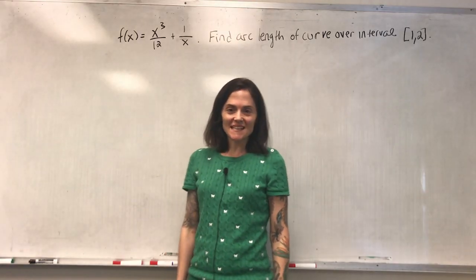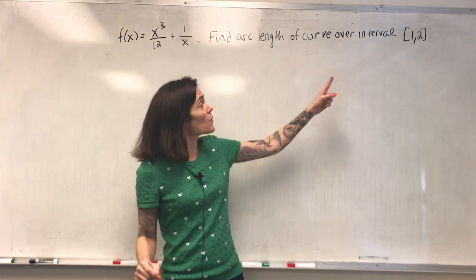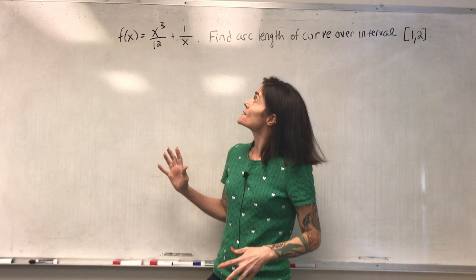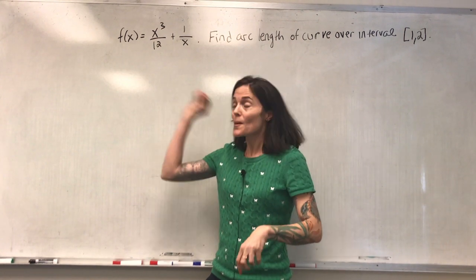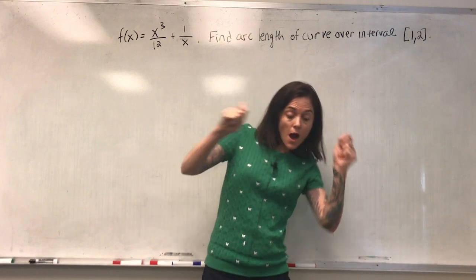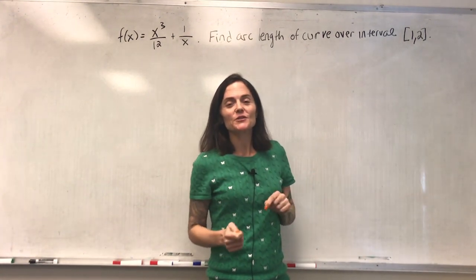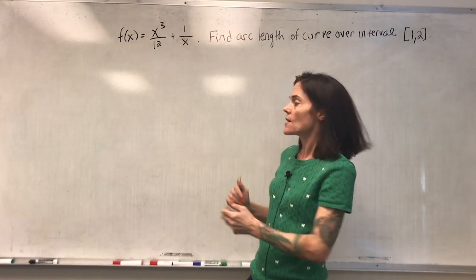Here's my second example. And we want the arc length, which means if you start at the curve at one comma, f of one is 13/12. If we start at one comma f of one, and we walk until we get to two comma f of two, walking along the curve, how far have you walked? This is the arc length.